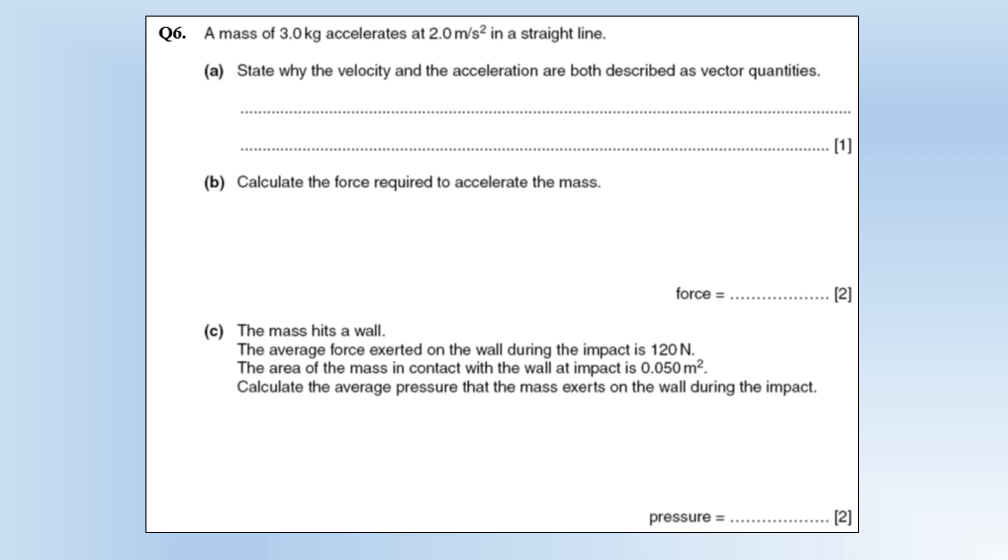So a mass of three kilograms accelerates at two meters per second squared in a straight line. State wise the velocity and acceleration are both described as vector quantities. So vector quantities have direction as well as magnitude.